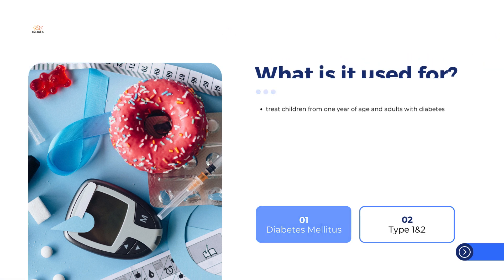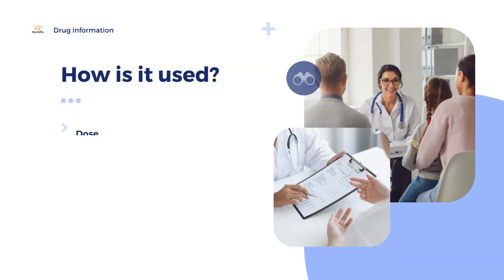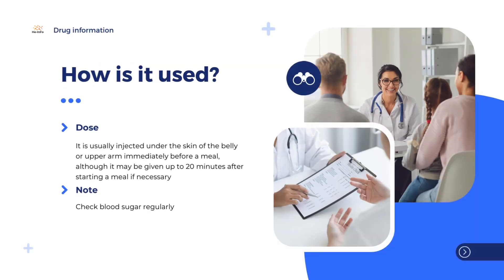The replacement insulin in Fiasp acts in the same way as the body's own insulin and helps glucose enter cells from the blood. This controls the level of blood glucose and reduces the symptoms and complications of diabetes. Insulin aspart enters the bloodstream faster than human insulin after injection and therefore works more quickly.